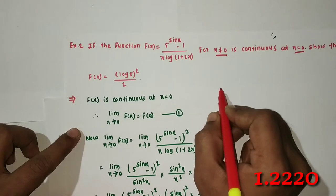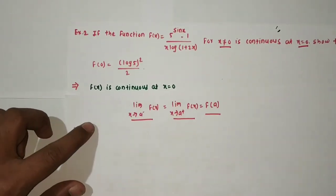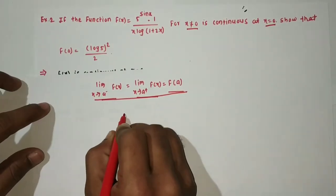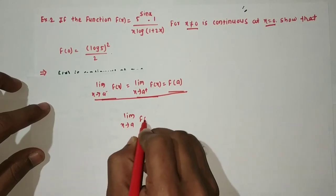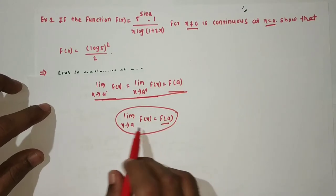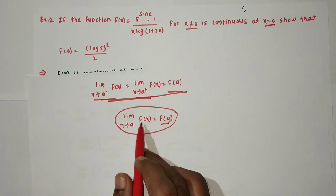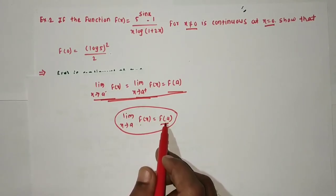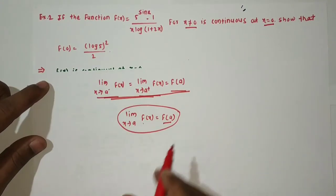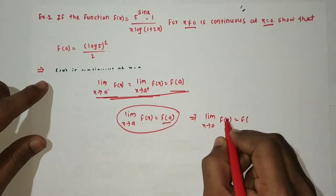Since f(x) is continuous at x = 0, we know that the limit of f(x) as x tends to 0 equals f(0). This means the limiting value equals the functional value. So we find: limit as x tends to 0 of f(x) = f(0), and this gives us f(0) = (log 5)² / 2, which is what we want to show.